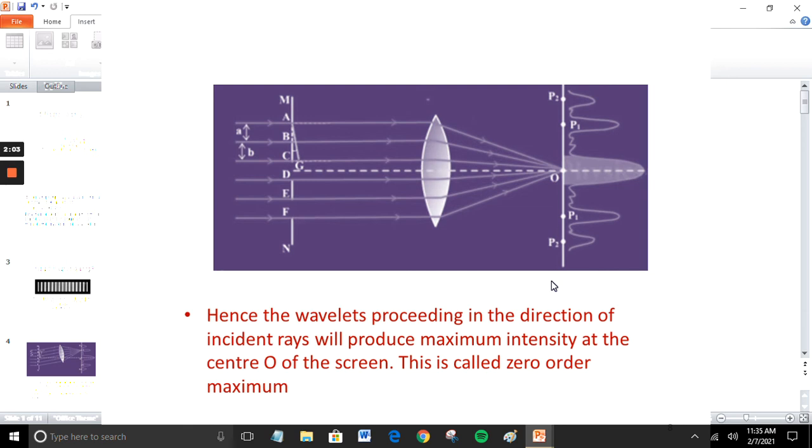If (A + B) sin theta_1 equals lambda, the diffracted wavelets incline at an angle theta_1 to the incident direction and the first order maximum is obtained.